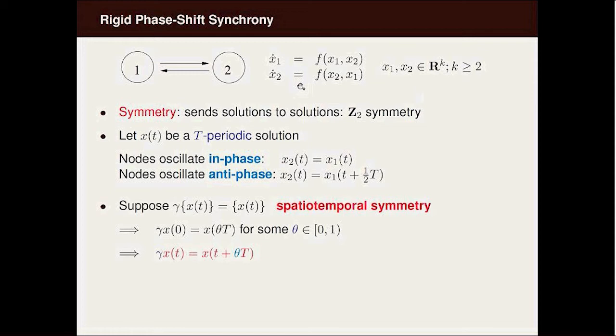To remind you how this comes about, suppose that we call gamma this transposition symmetry interchanging one and two. If gamma takes x of t, the trajectory to itself, then gamma x of zero lies on the trajectory, therefore it's x of theta T, where capital T is the period of x and theta is between zero and one.